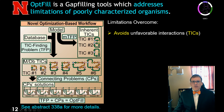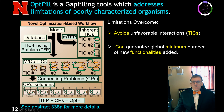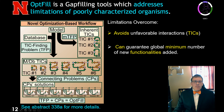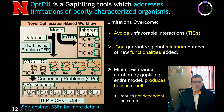OpFill is a gap-filling tool that addresses limitations of current gap-filling tools, especially problematic for poorly characterized organisms like Exophiala. It avoids thermodynamically infeasible cycles and guarantees a globally minimal number of new functionalities, enabling a conservative reconstruction. This is done by a TIC-finding problem first to identify all potential thermodynamically infeasible cycles, followed by a connecting problem to produce a holistic whole-model solution, making it less dependent on individual curators.